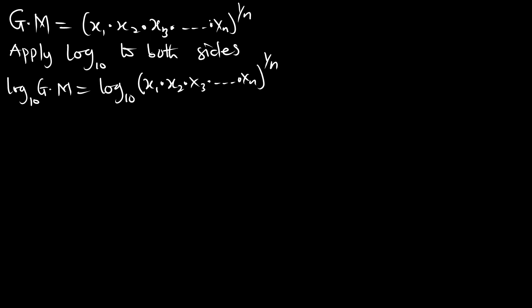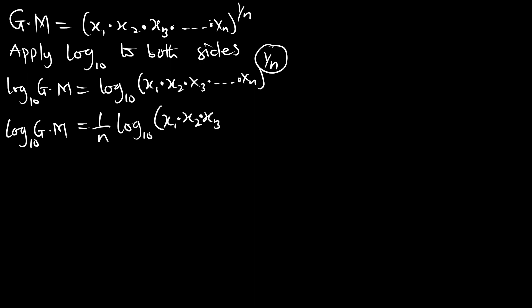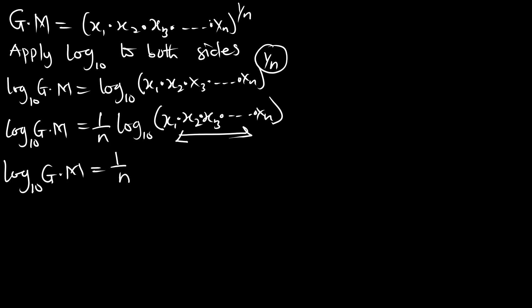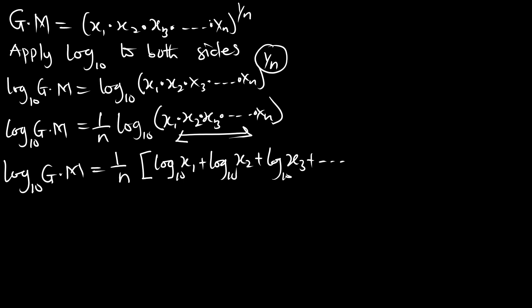From the laws of logarithm, we can pull the exponent down: log base 10 of GM equals 1 over n multiplying log base 10 of (x1 × x2 × x3 × ... × xn). Then, because we have a product inside the logarithm, we expand it: log(x1) + log(x2) + log(x3) + ... + log(xn).